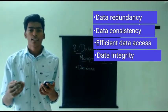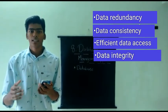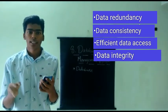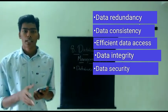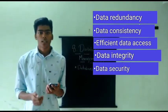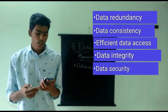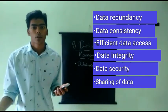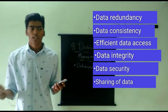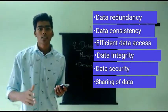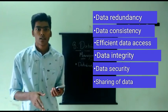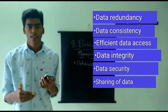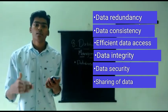The fourth point is data integrity — it means the data has the same consistent meaning. The fifth point is data security — you can't access the data without authorization. The sixth point is sharing of data — if you have a result, you can share it with your friends.